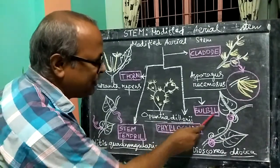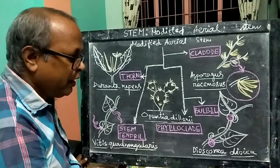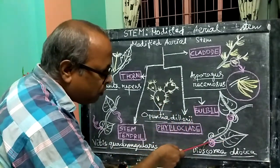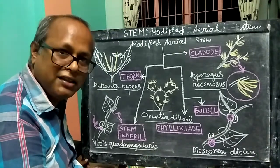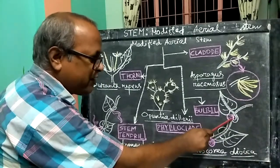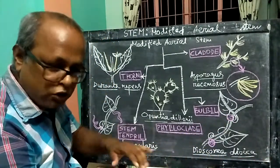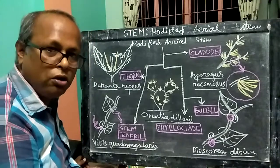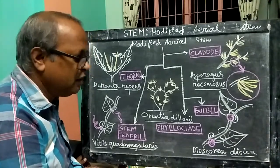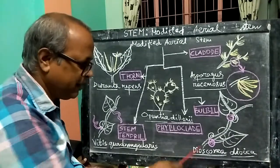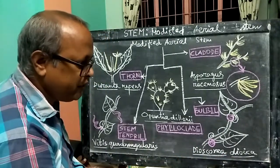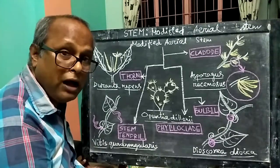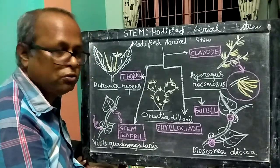Now the next modification is the Bulbil. The bulbil has a specialized structure. The bulbil is small and compact. We have seen examples from Dioscorea alata — also called Chupriya-ulub, Globa Bulbifera, and Condopuspherub. This is the same as the bulbil modification.